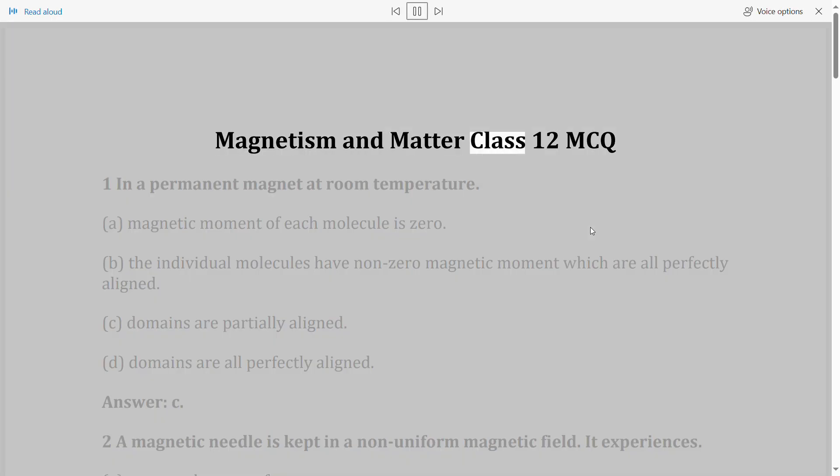Magnetism and matter class 12 MCQ. Question 1: In a permanent magnet at room temperature, A. Magnetic moment of each molecule is zero, B. The individual molecules have non-zero magnetic moment which are all perfectly aligned, C. Domains are partially aligned, D. Domains are all perfectly aligned. Answer: C.